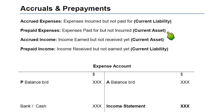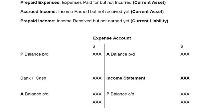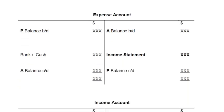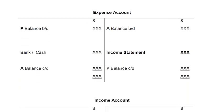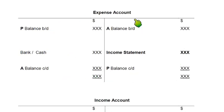Prepaid expense is our current asset. Whenever we have paid some extra amount that we will be using in the future, it is a current asset. Now whenever an exam question comes for accruals and prepayments, we need to make an expense account. This is a simple T-account.